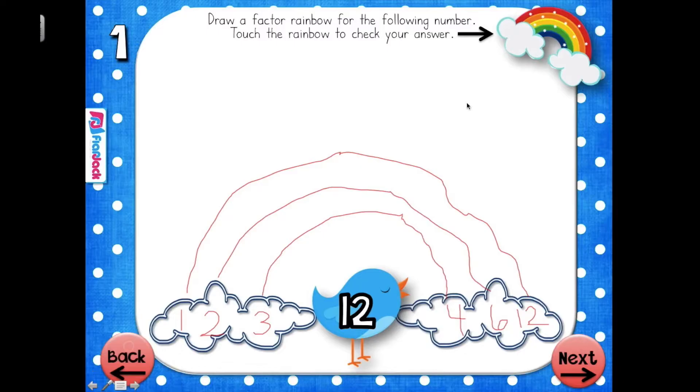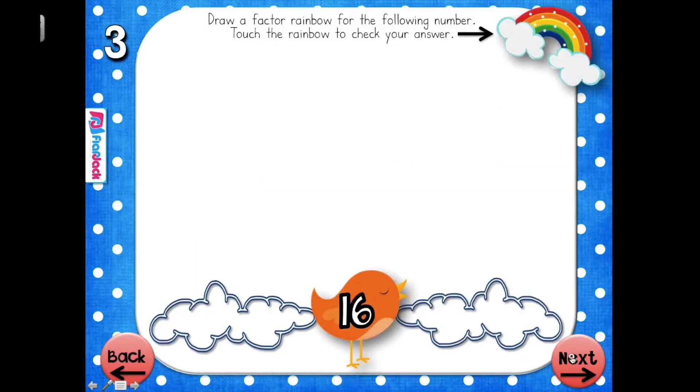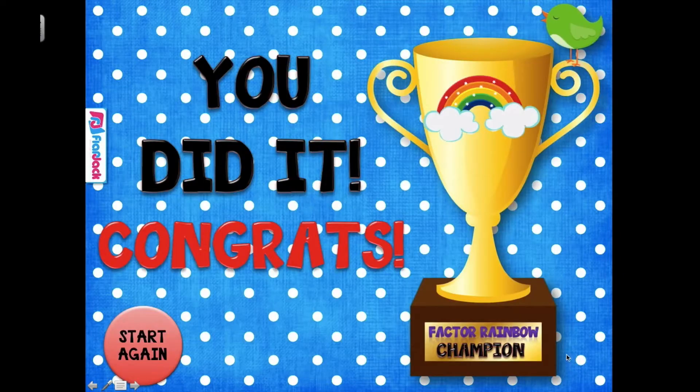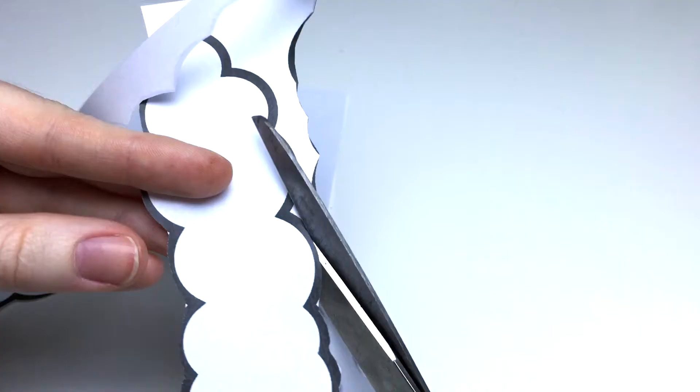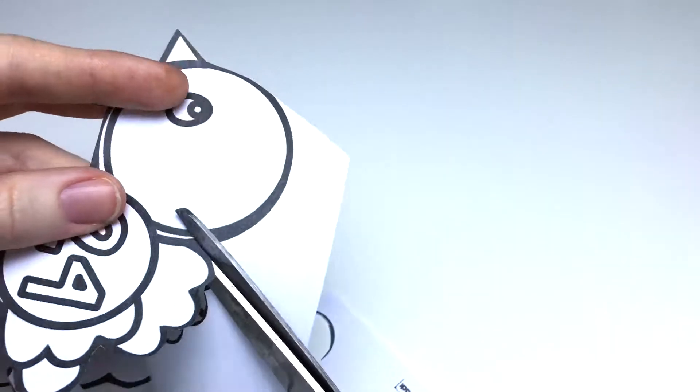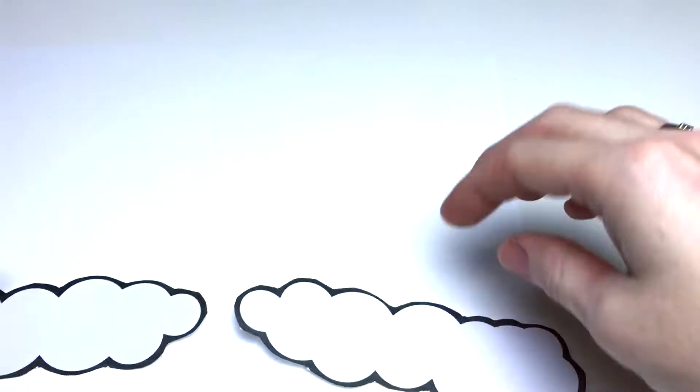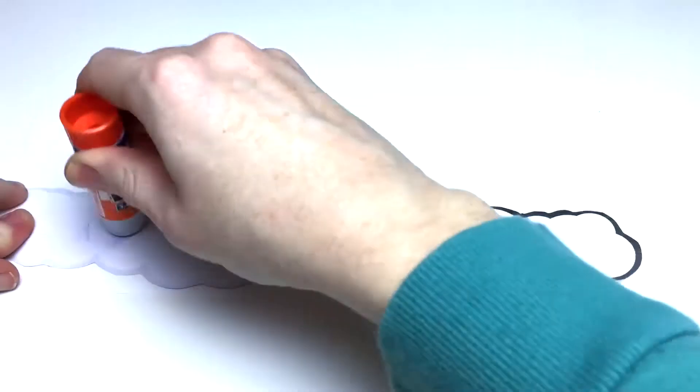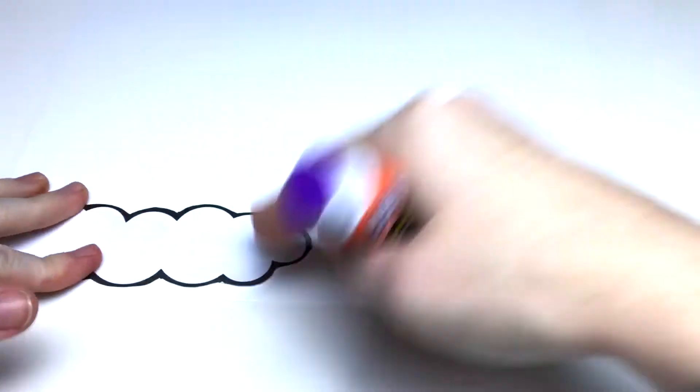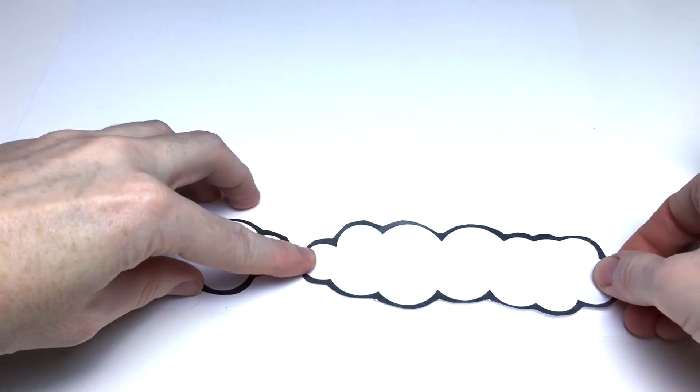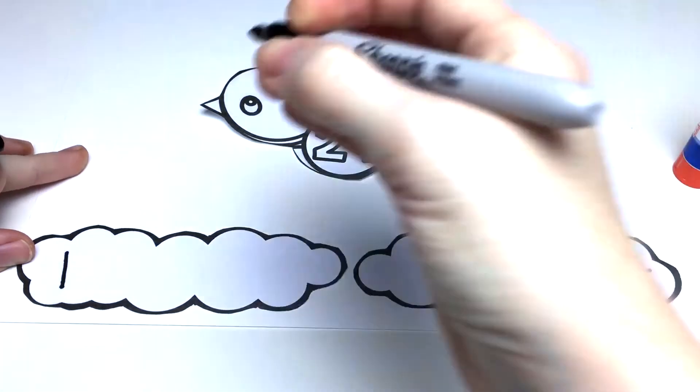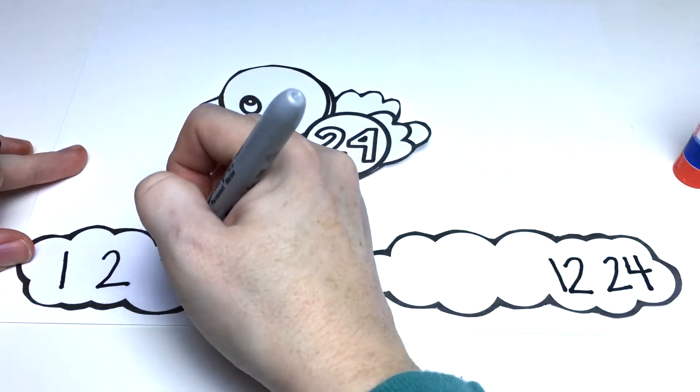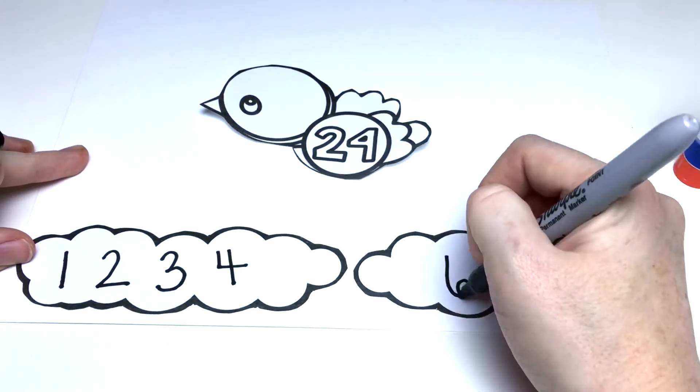There's a fun Factor Rainbows craftivity with different numbers for students to choose from. They cut out the clouds and their factor bird, then I suggest placing it on cardstock or white construction paper.